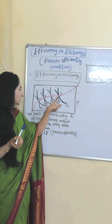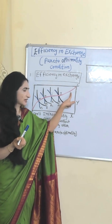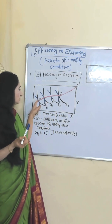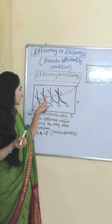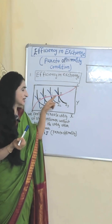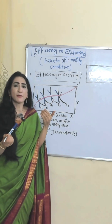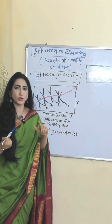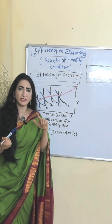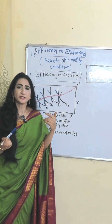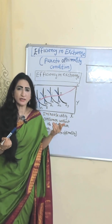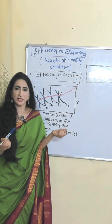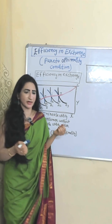This OC — this red one — is the contract curve. All points on this contract curve, like Z, H, I, show Pareto optimality. That means all points show that we cannot increase the utility of one consumer without reducing the utility of the other consumer.